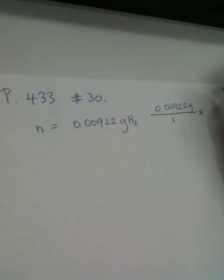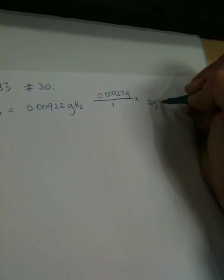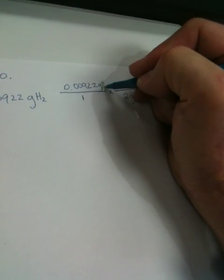So, our conversion here is going to be two grams. We have grams on the bottom because we're trying to cancel grams up here, which is also H2s. And then on the top, we have one mole, just like we did in the last chapters.